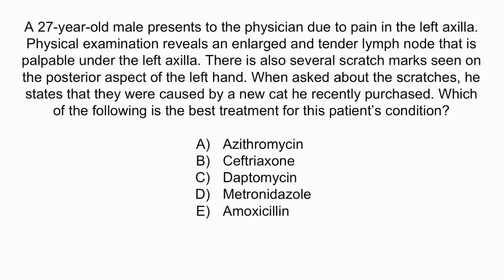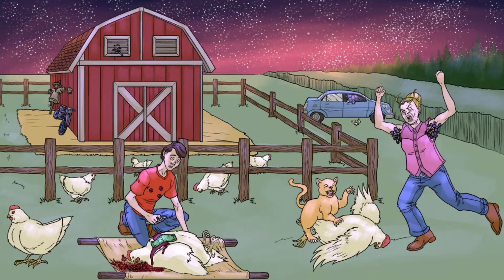Hopefully from the question stem, you notice that this patient has painful axillary lymphadenopathy. Also, the scratches on his arm were caused by a new cat that he recently purchased — this is a dead giveaway for cat scratch fever disease. As we just discussed, an effective treatment for this condition is azithromycin, which is a macrolide. So the correct answer is A, azithromycin. All of the other answer choices are ineffective for cat scratch fever disease. Recall that the scarecrow leaning up against the barn represents macrolides, so cat scratch fever disease can be treated with macrolides such as azithromycin.